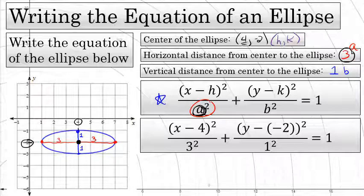You're not going to put just a 3 there — 3 squared is the value that goes in that denominator. The value of k in the equation is negative 2; the y-coordinate of the center is k. The standard form says y minus k, so if k is negative 2, that's (y - (-2))² over b squared. The value of b, the vertical distance from the center to the top or bottom, is 1, so that denominator will be 1 squared.